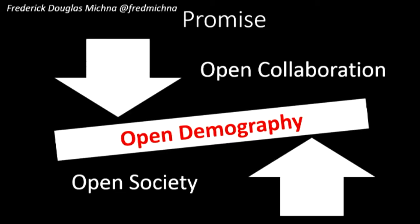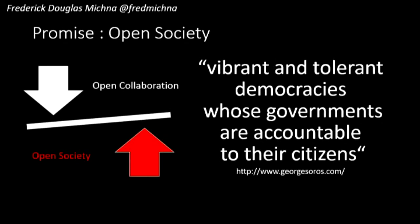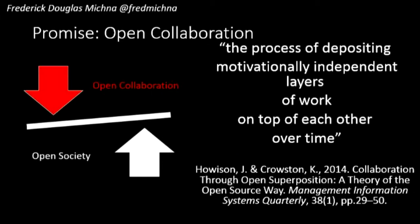There are two sides of open demography. The first is open collaboration — we know about open software, and somewhat in that sense there's got to be something in open demography there. The other side is an open society. The Open Society Foundation calls the open society vibrant and tolerant democracies whose governments are accountable to their citizens. Open collaboration, on the other hand, is the process of depositing motivationally independent layers of work on top of each other over time.